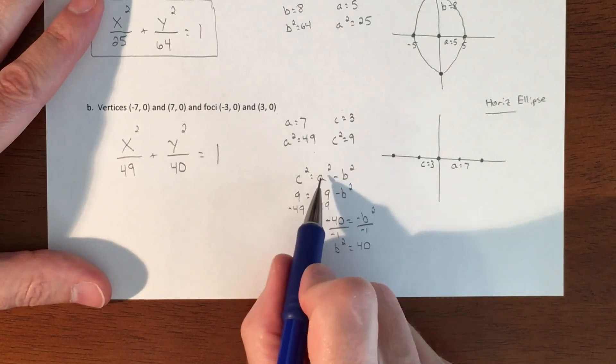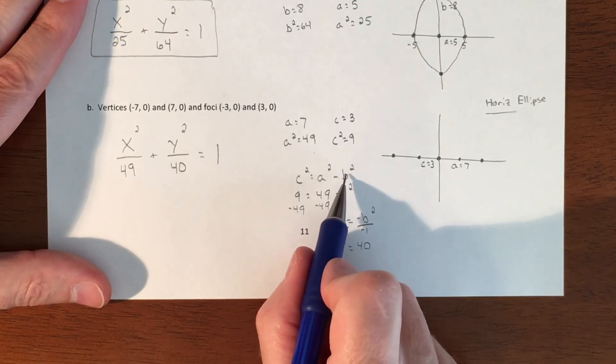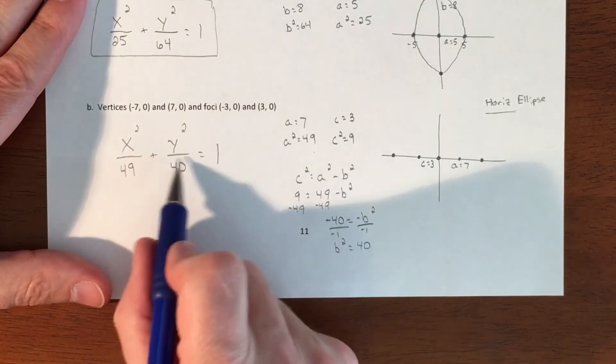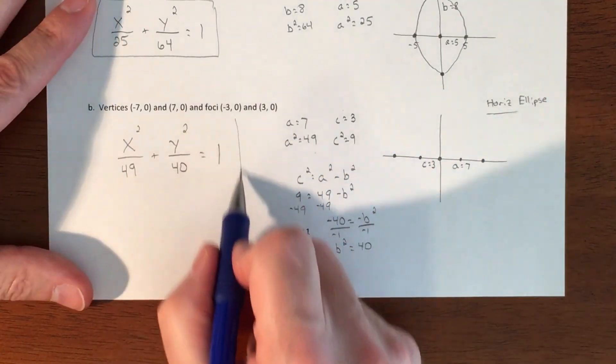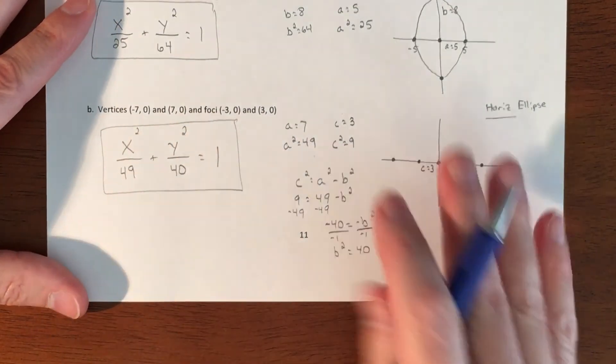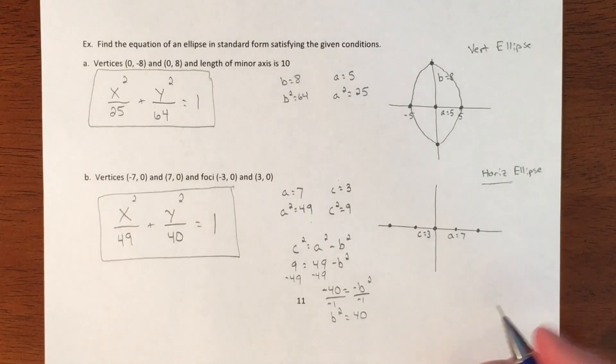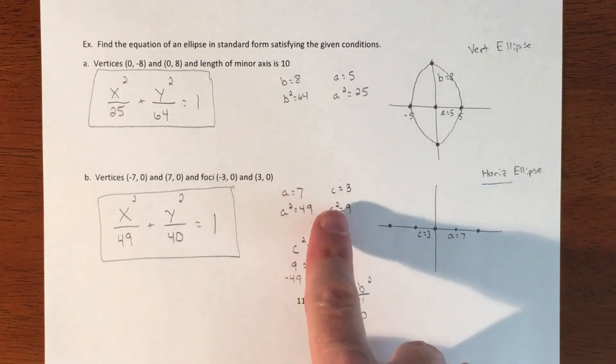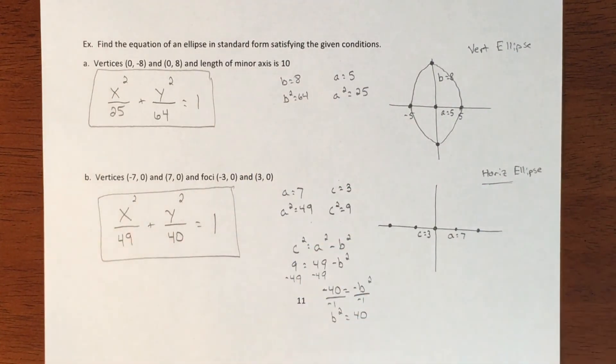I would switch that to b squared minus a squared if it was a vertical one, because then I would want this to be the bigger value. That is taking some information, giving you just enough information to draw a picture, figure out some of the values, and turn that into an equation.